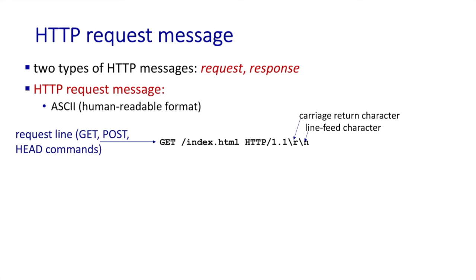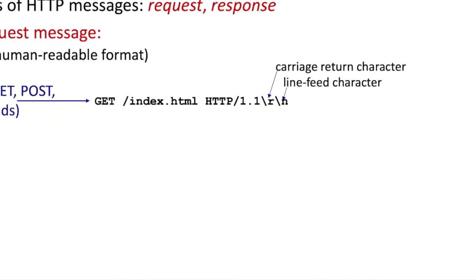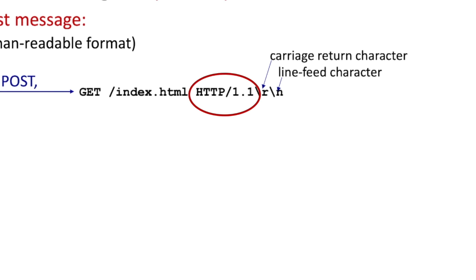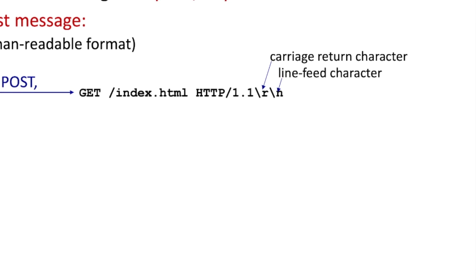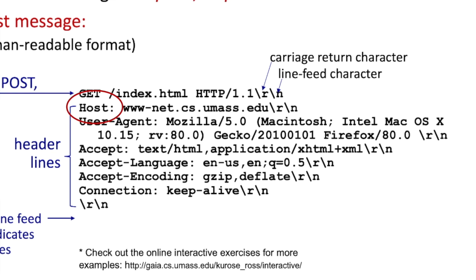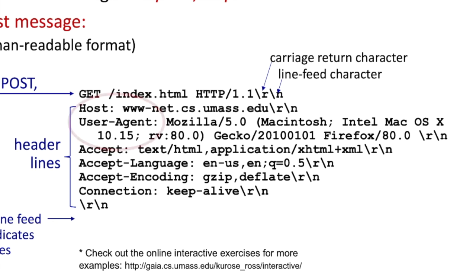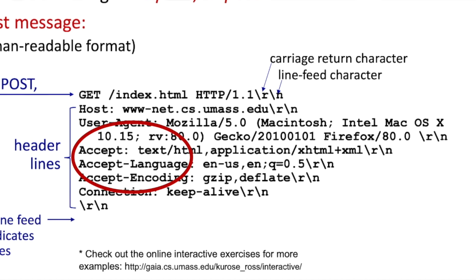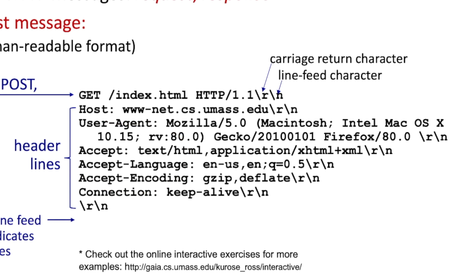A request message starts with a single request line beginning with a method name — for example, GET — followed by a URL (in this case the name of the HTML file being requested), the version of HTTP (in this case 1.1), and a carriage return line feed. The request line is then followed by header lines that provide additional information: the name of the host, the type of browser making the request (in this case Firefox), the types of objects that can be accepted, the preferred language (US English), and whether this connection should be kept alive. The request message ends with an empty line — very human readable.